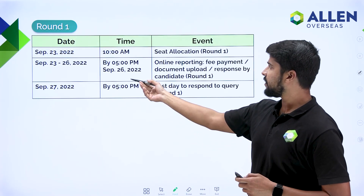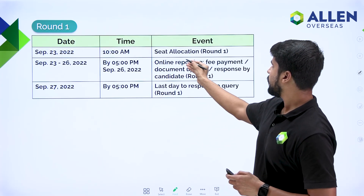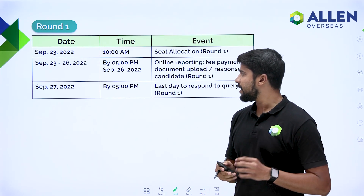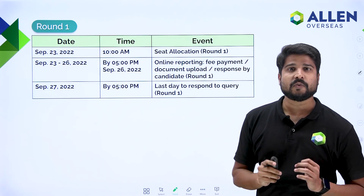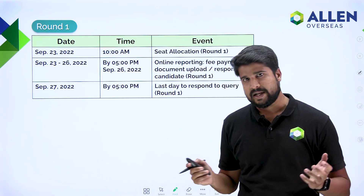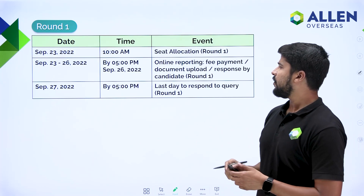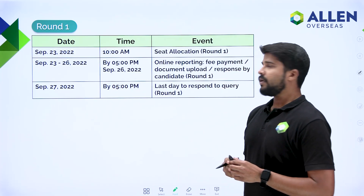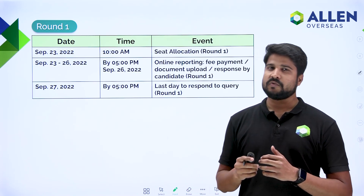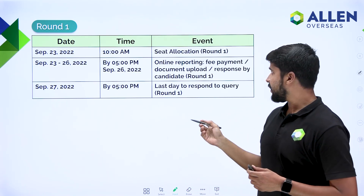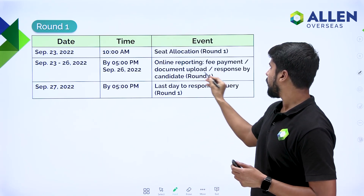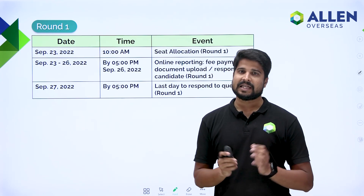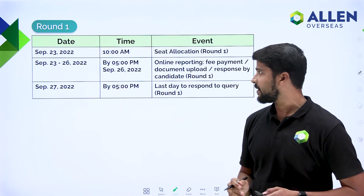Round 1 seat allocation will open on 23rd September at 10 am. The last day to respond to queries is 27th September. Between 23rd and 26th September, the online reporting process — fee payment, document upload, and response by the candidate — can all be completed.